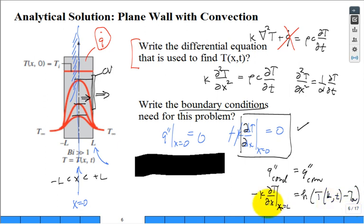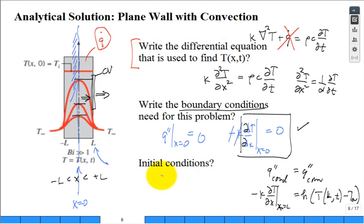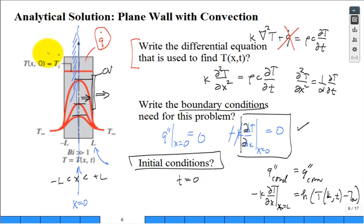The initial condition is: what is the temperature at any location X at time equals zero? It's given — the wall starts at uniform temperature T_initial. So T(x, 0) = T_initial for all X between negative L and plus L.